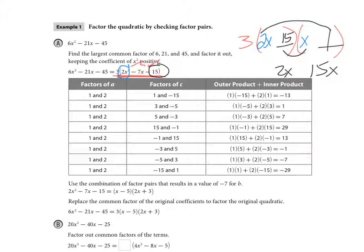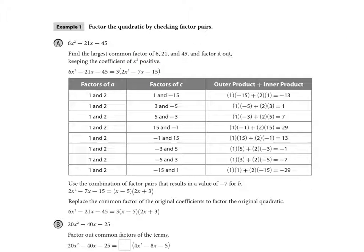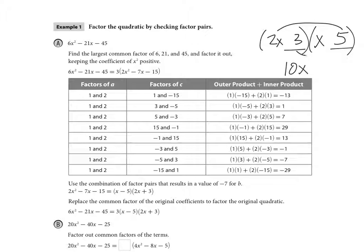Now I try different terms. With 2x and x, since 1 and 15 didn't work, the next factors of 15 are 3 and 5. So I try 3 and 5: that gives me 10x and 3x.